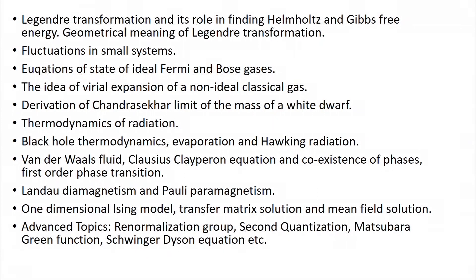Then I am going to come back to the idea of a Fermi gas and show how to derive the Chandrasekhar limit of the mass of a white dwarf. It is an application of the idea of degeneracy pressure, which is a concept central to the notion of an ideal Fermi gas, and I am going to show how that is central to understanding why white dwarfs have an upper mass limit.